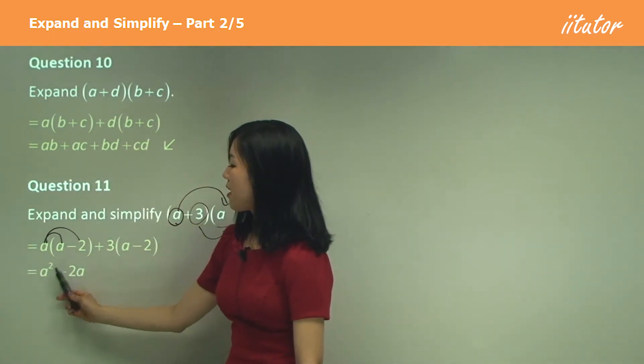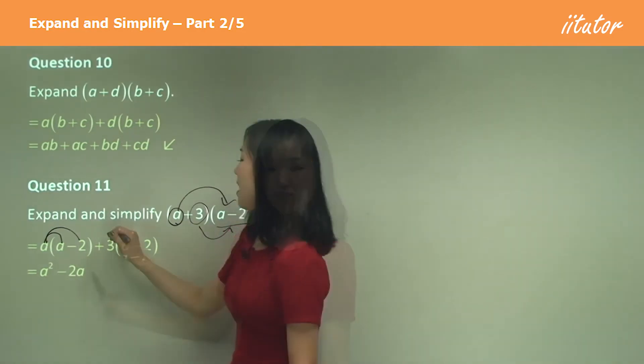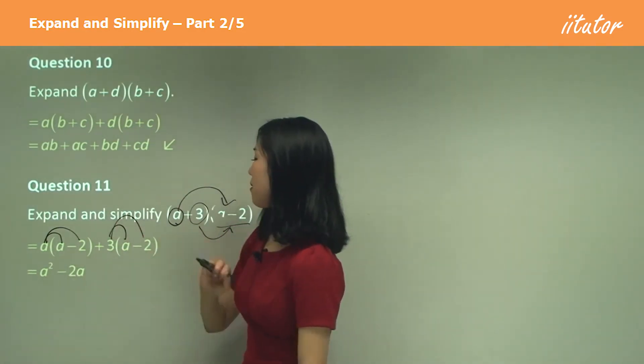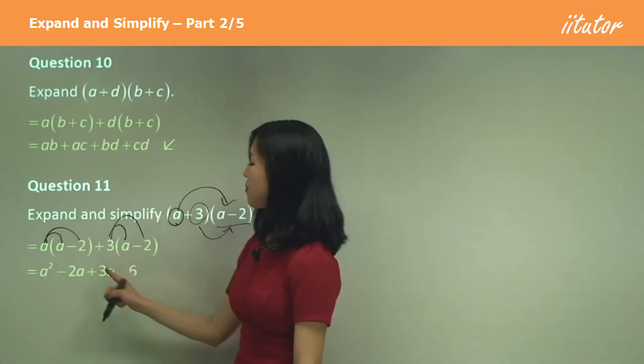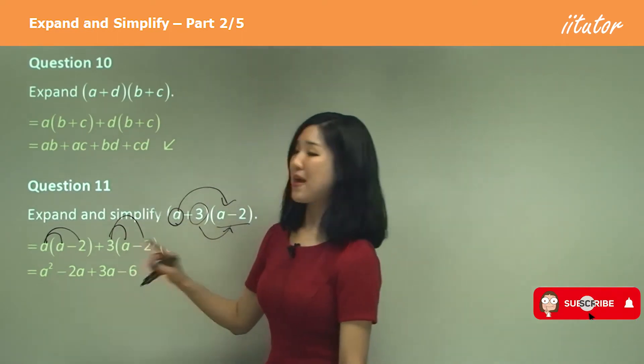So that's A squared. A times A is A squared. A times negative two is negative two A. And then three times A, three times negative two. So three A minus six. Make sure it's a negative six because positive negative makes a negative.